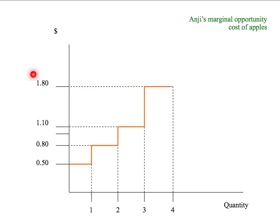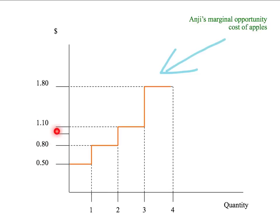We drew that as Angie's marginal opportunity cost curve for apples. We noted that we could measure Angie's total cost of giving up a quantity of apples by the area under the marginal opportunity cost curve. For example, if Angie gives up three apples, the total cost is $0.50 plus $0.80 plus $1.10, which equals $2.40. That's the same as the area under Angie's marginal opportunity cost curve up to three apples — the pink area represents her total opportunity cost of giving up three apples.